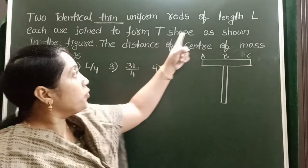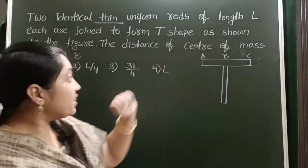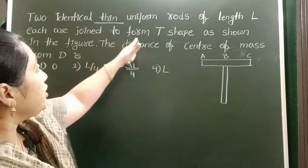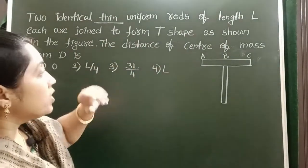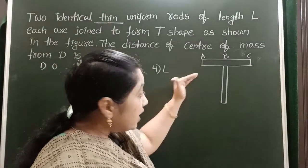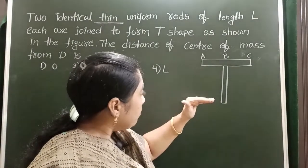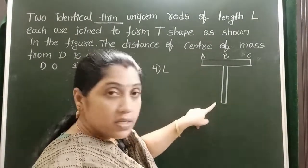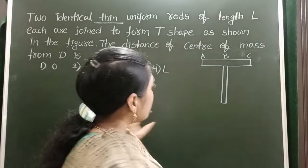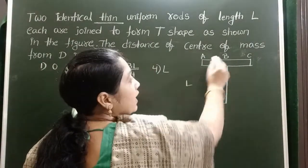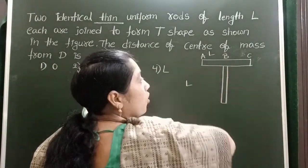Two identical thin uniform rods of length L each are joined to form a T shape. These two thin rods have the same length. The length of the first rod is L and the length of the second rod is also L.